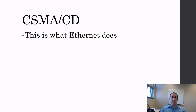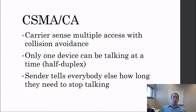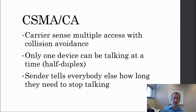Recall CSMA/CD — Carrier Sense Multiple Access with Collision Detection — is what Ethernet does. You listen for collisions, wait some amount of time if there is a collision, then try to transmit again. WiFi doesn't work on the same principles. It uses CSMA/CA — Carrier Sense Multiple Access with Collision Avoidance. The reason we have collision avoidance instead of collision detection is that WiFi devices can only send or receive; they can't do both at the same time. These are half-duplex devices.